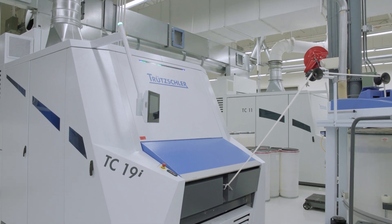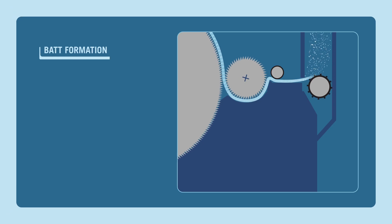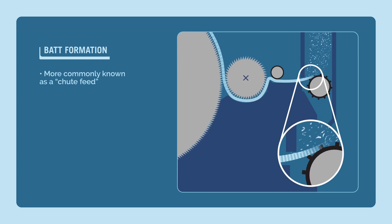Before the fiber gets to the carding machine, it must be prepared for that process by going through bat formation. The bat former is more commonly known as a shoot feed.